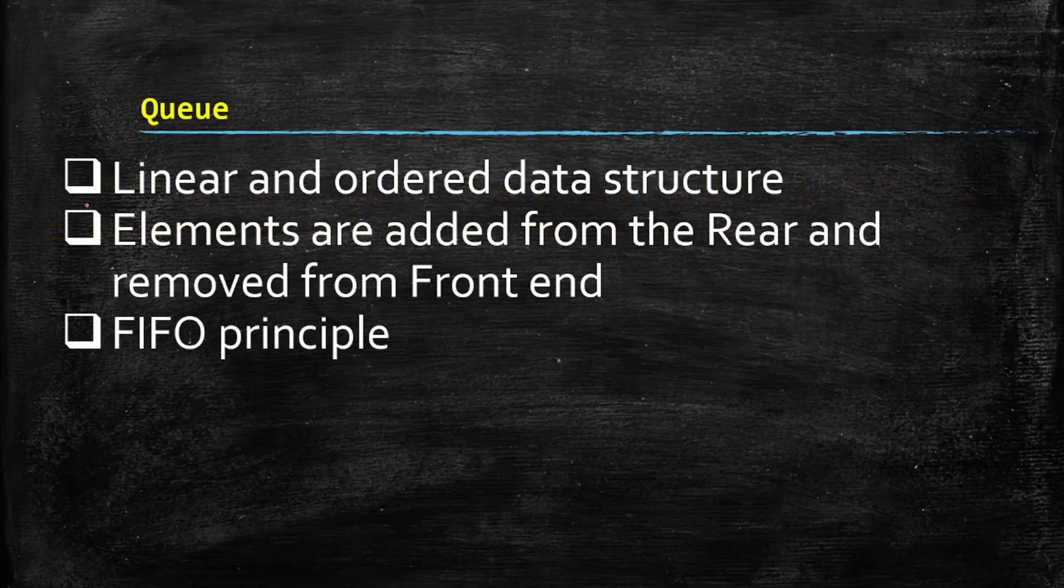What is a Queue? These are the three points you definitely have to mention. It is a linear and ordered data structure where the elements are added at the rear and removed from the front end. This is an important keyword. And you have to mention it follows FIFO principle which means first in, first out.